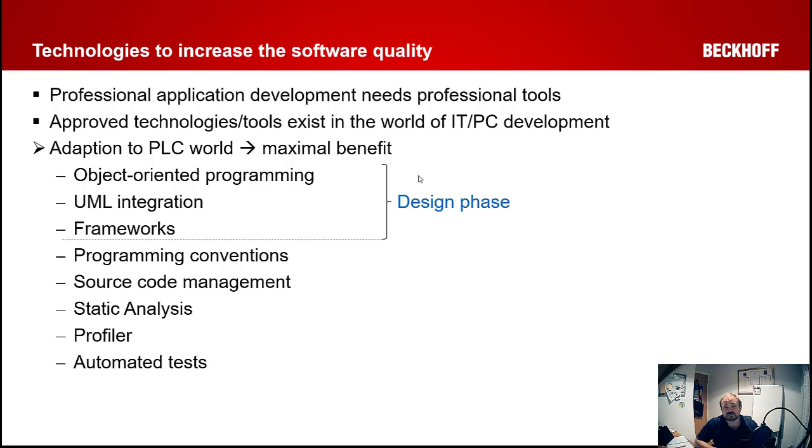From the first video we have the elements at the design phase. So this is your object-oriented programming, UML integration, your frameworks. This comes in at the stage where you're literally designing the code that's going to run your machine. When you're actually programming the machine in your coding phase, that's when your programming conventions come in, so what your company applies as naming conventions, for example, how you use variables, what type of variables, how you make structures, along with your source code management, Git or any other source code tool.